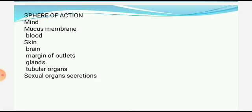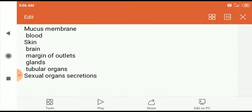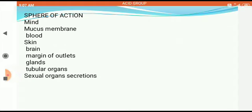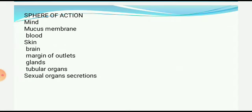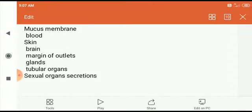In the mucous membrane, there is a lot of burning, cracks, and injuries. On blood, it can act as a blood thinner or as a blood coagulant. On the skin, there is a lot of cracks, injuries, and unhealthy skin. On the brain, there is brain effect. At the margins of outlet — the mouth, anus, vagina, urethra — there is a lot of cracks and typical unhealthy, thickened skin. It also acts on glands, tubular organs like the urethra and fallopian tube, and on sexual organs and their secretions.